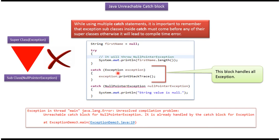Exception is a superclass of all exceptions, so this catch block can handle any kind of exception, including NullPointerException. So after this catch block, if we define a NullPointerException catch block, then we will get a compile-time error.